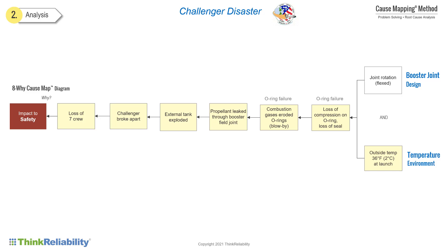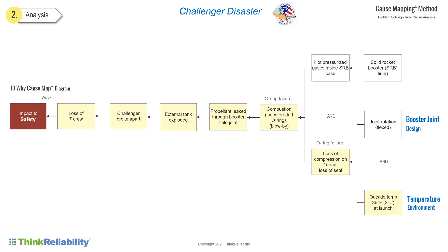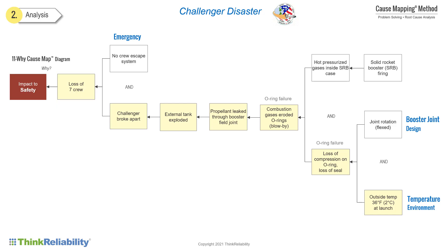As we continue asking why questions, the cause map continues to expand as more detail is added. The combustion gases eroded the O-rings because of the loss of compression and the hot pressurized gases inside the solid rocket booster — it's now a nine why. The hot pressurized gases are because the solid rocket boosters are firing, making it a 10 why. Looking at the loss of the crew, it is because the Challenger broke apart and there was no crew escape system. This 11 why has been expanded into different causal paths that reveal options for mitigating risk.